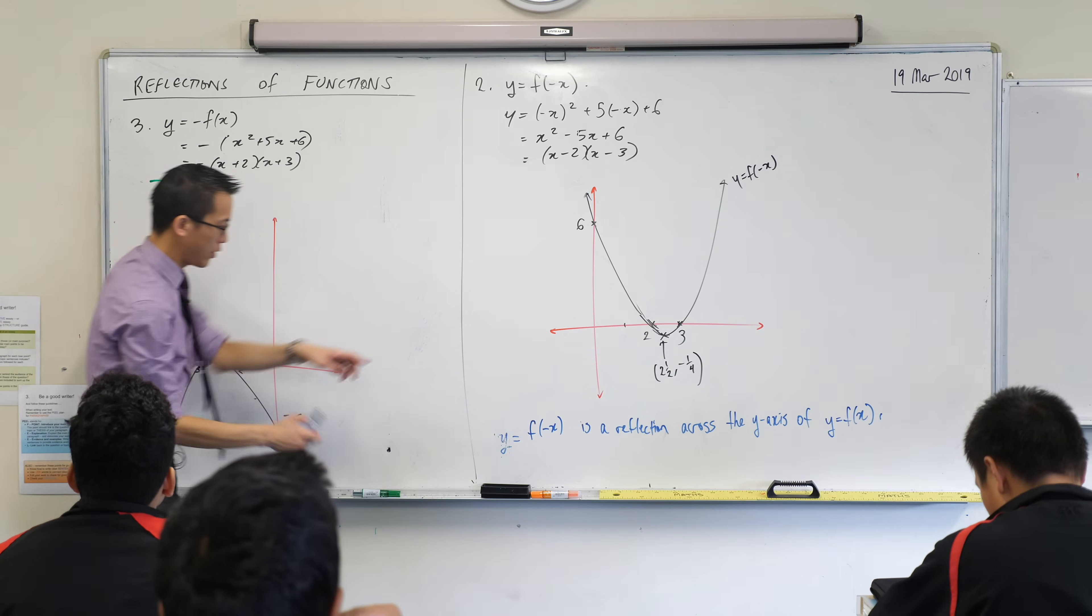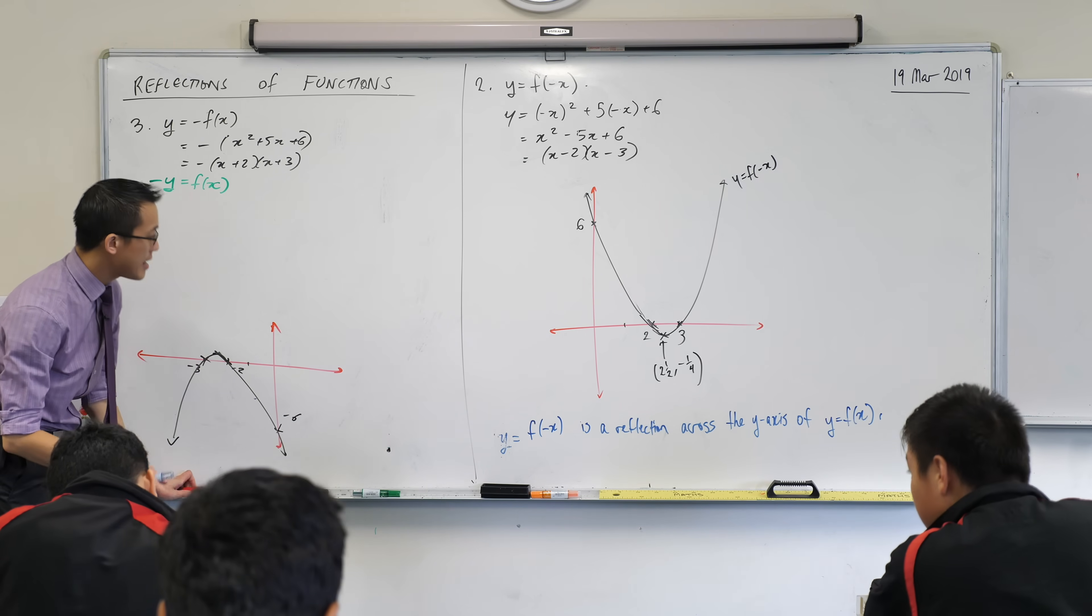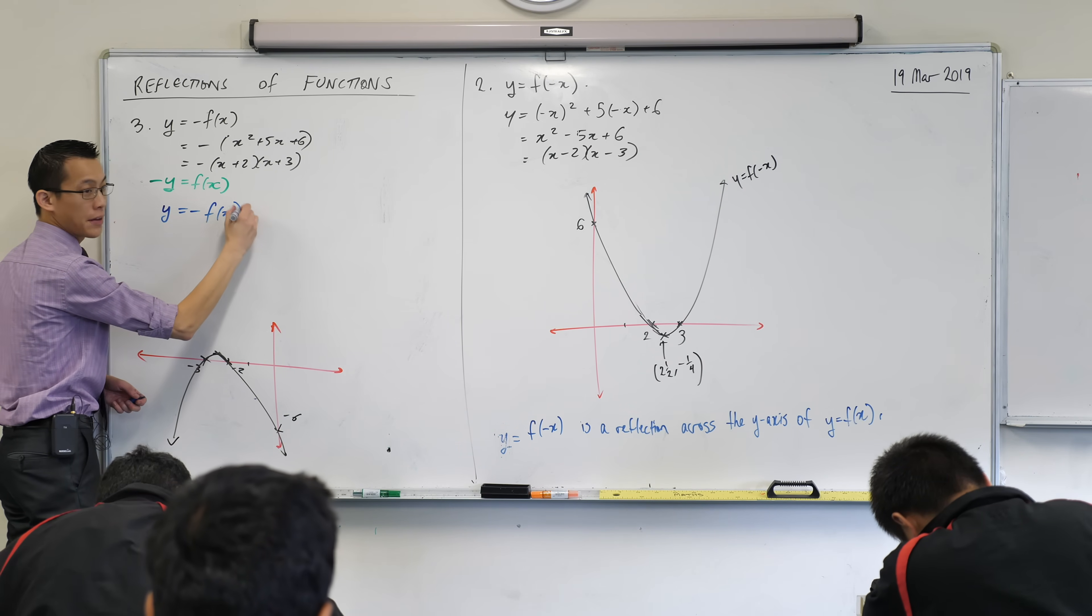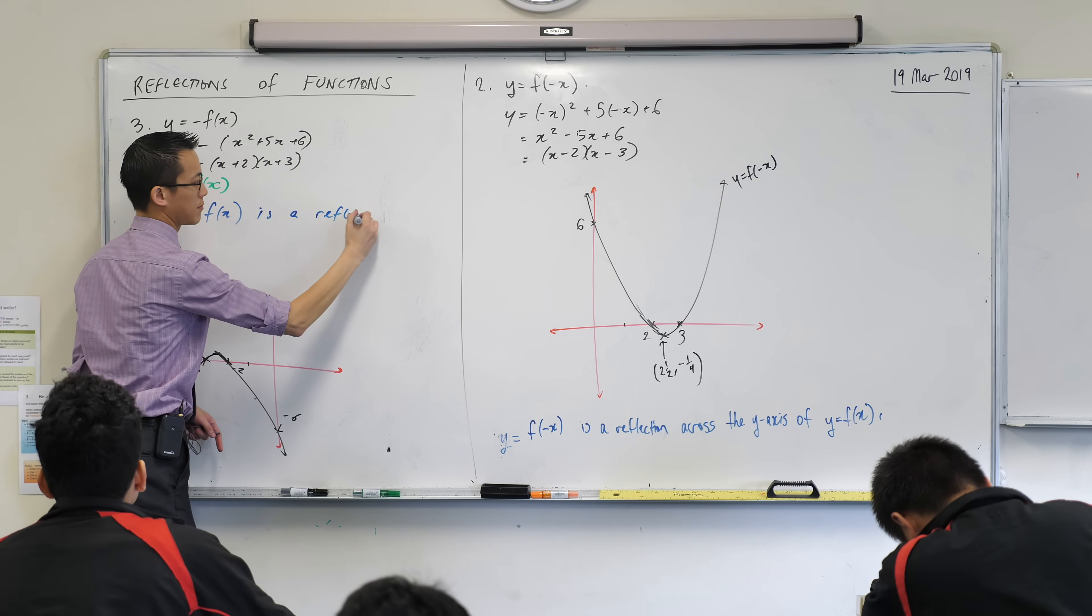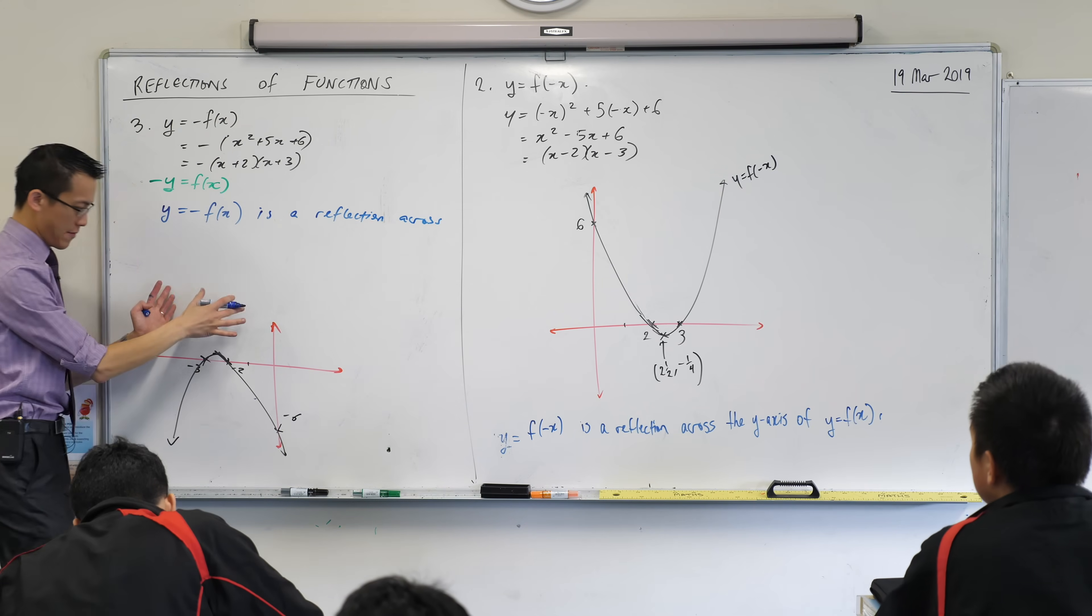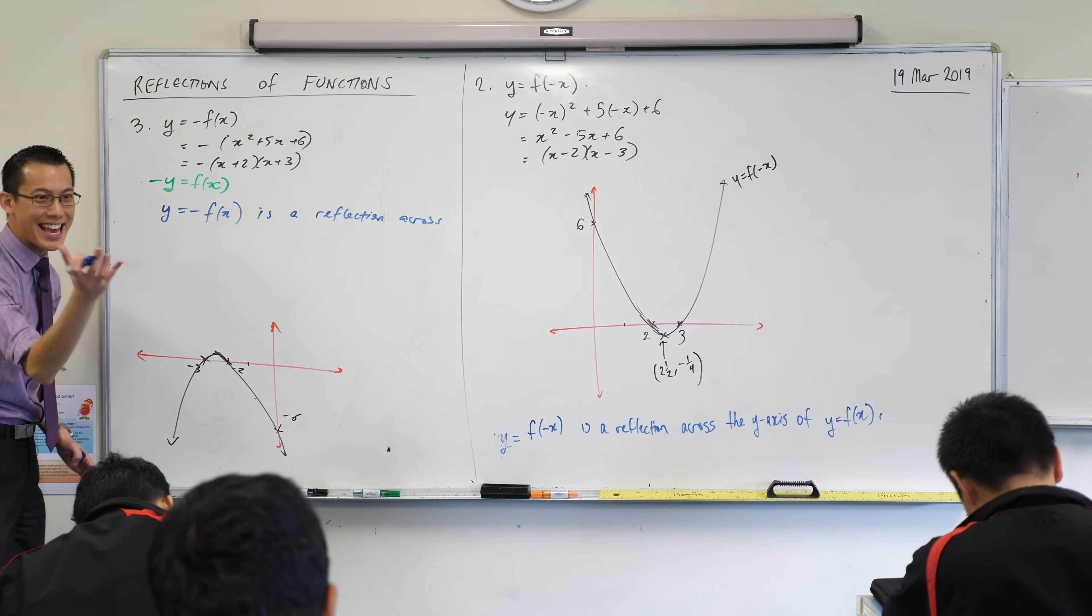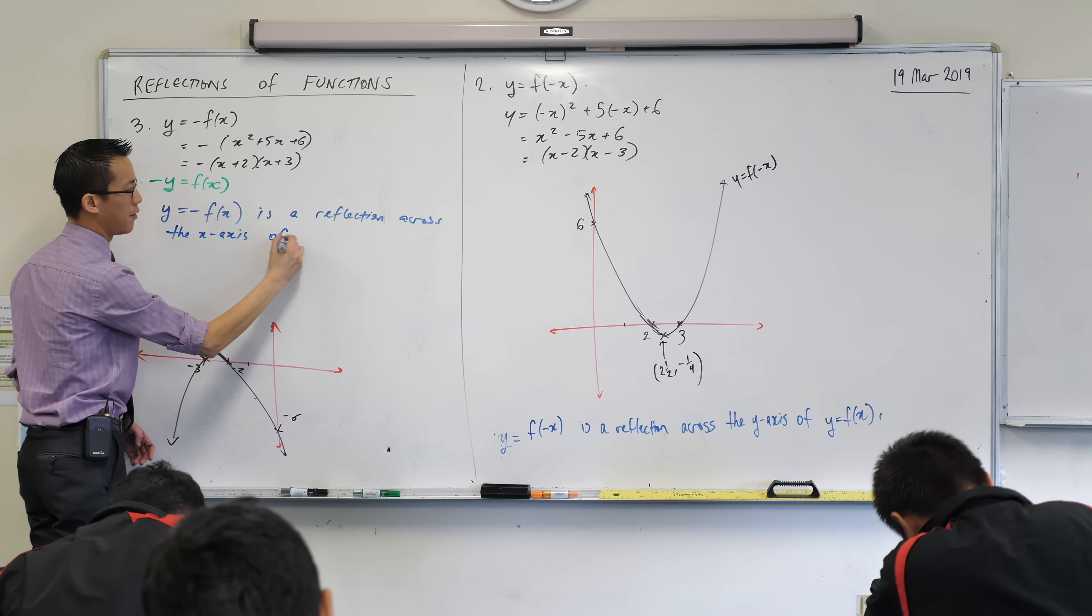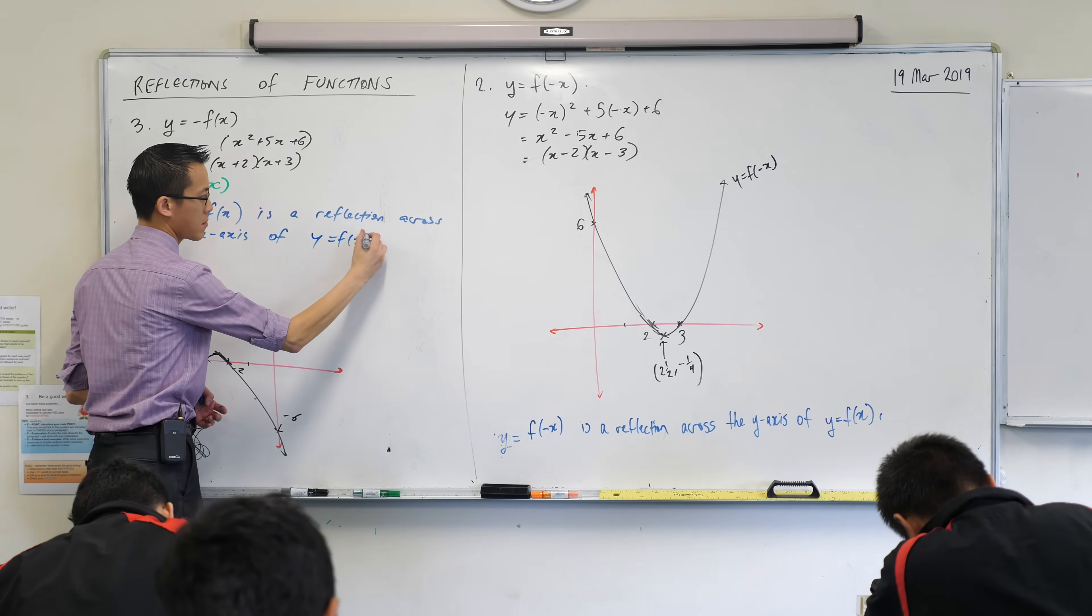So we can summarize this just like we did before. Let me get rid of this. y equals, here we go, y equals negative f(x). It's also a reflection. But because it's a vertical reflection, which axis is it reflecting across? Not the y axis, it's the x axis. Across the x axis of whatever we started with, f(x). Okay?